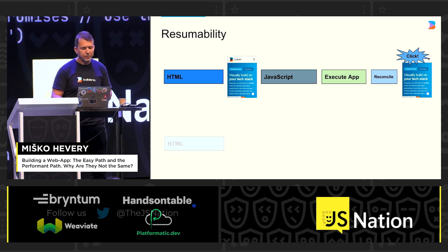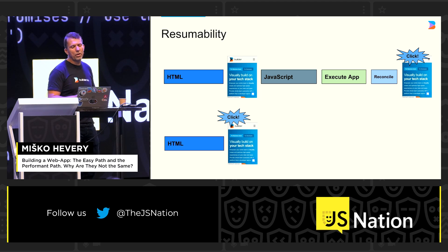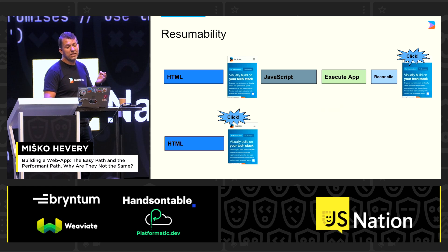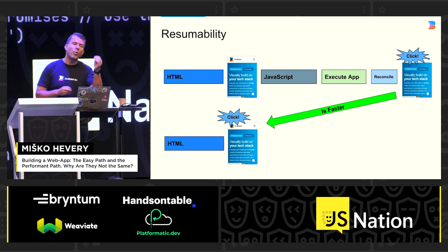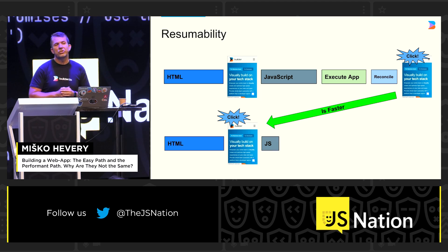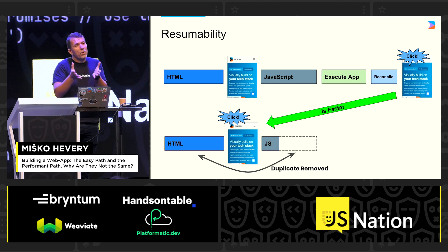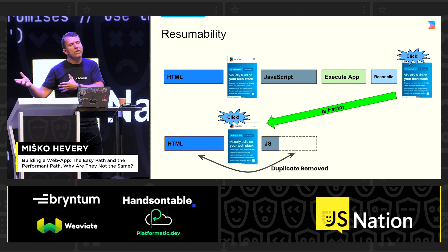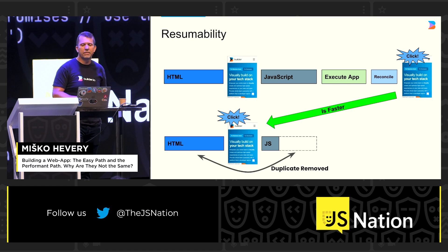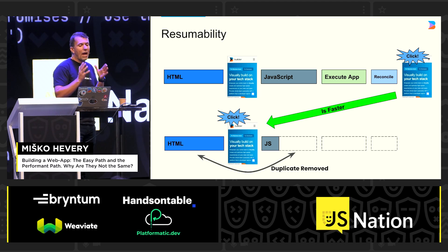I'd like to show you an alternative world, a world I call resumability. You start with HTML and the page just as before, but there's a huge difference: this page contains information about where the listeners are. As a result, you can immediately click on it and interact. The moment a button shows up, it is ready to be clicked on. But you don't have JavaScript yet, so you have to download that — and in this case, notice the JavaScript is much, much smaller. We removed the duplicates. We looked at the page and said, that hello world you printed is static — it will never have to be re-rendered again on the client. So why are we sending this across? And because the HTML is not there, we don't have to execute the application or reconcile it. Your application not only shows up faster, it is fundamentally quicker to interact with.